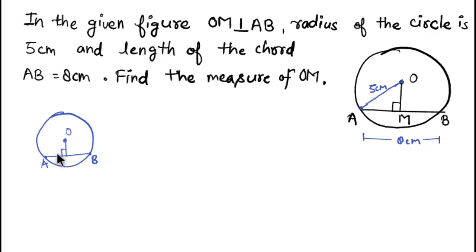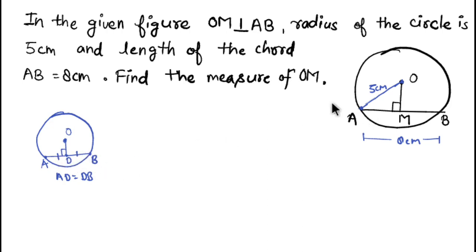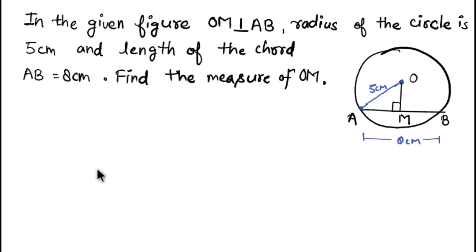Whenever we draw a perpendicular to a chord from the center, this perpendicular bisects the chord. So if D is the point where the perpendicular from the center meets the chord, then AD equals DB. The perpendicular from the center bisects the chord.